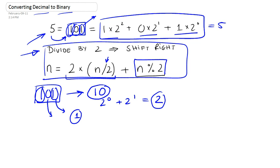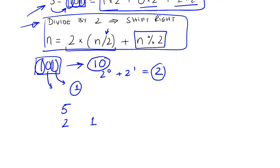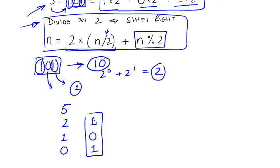If we actually look at 5 and divide it by 2, we get 2, remainder 1. Then divide that again by 2, we get 1, remainder 0. Divide this again by 2, you get 0, remainder 1. And so this is your binary representation: 1, 0, 1.